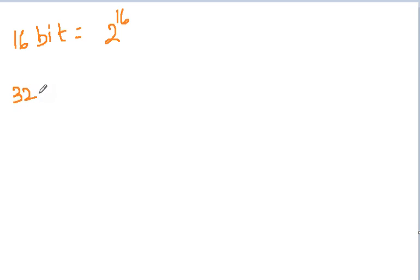So similarly, a 32-bit processor is a number that's way too big. A 64-bit processor is 2 to the power of 64 locations.